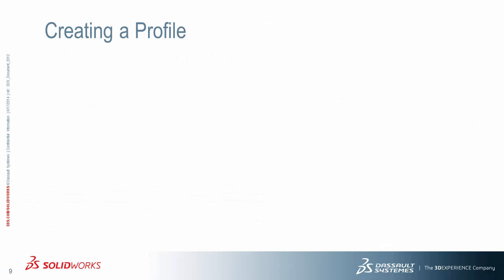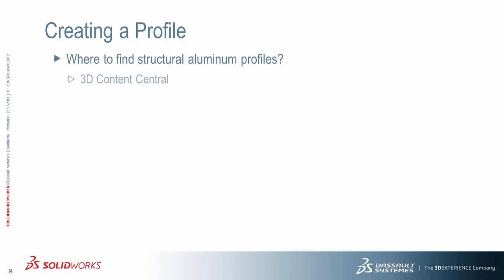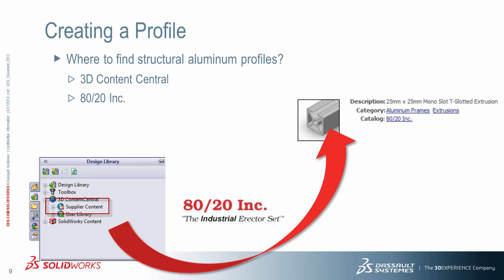Let's get started with the basics: creating a profile. Weldment structural members use something called a profile, which is nothing more than a 2D sketch. But do we have to create it from scratch? The first great resource is 3D Content Central, a SOLIDWORKS website that contains millions of components. 3D Content Central can actually be accessed from inside the Design Library right inside of SOLIDWORKS. In this case, we're going to use the supplier 8020 and download one of their profiles.